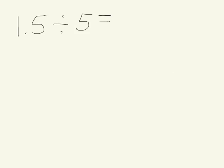This question asks us what is 1 and 5 tenths divided by 5. If I read it in unit form, I can say what is 15 tenths divided by 5. When I say it that way, I realize that 15 tenths divided by 5 would be 3 tenths. There would be 5 groups of 3 tenths in 15 tenths.